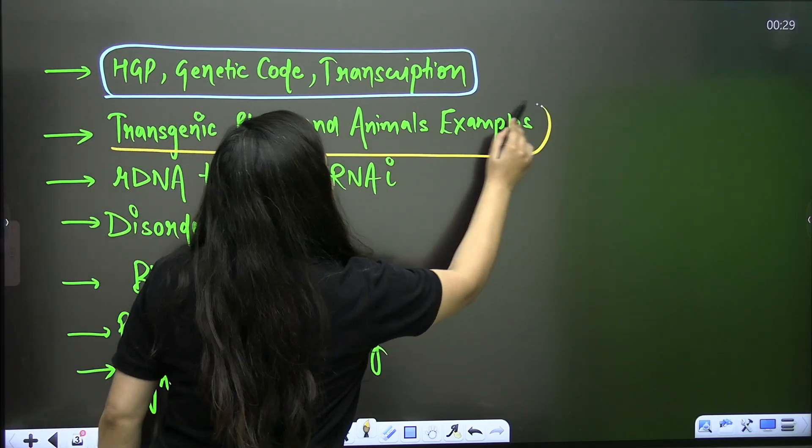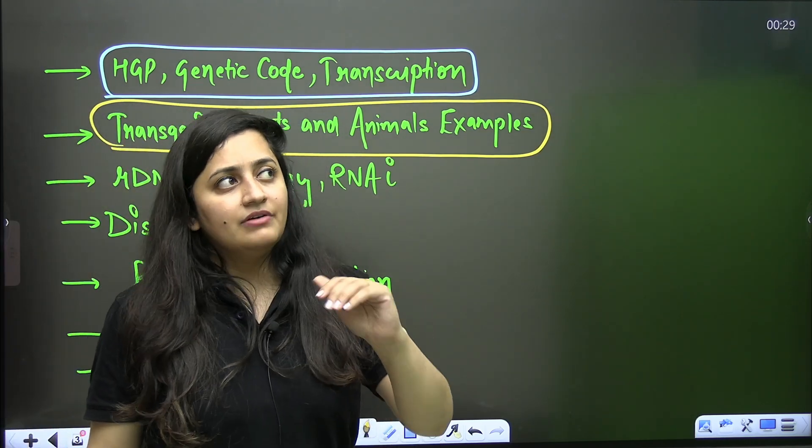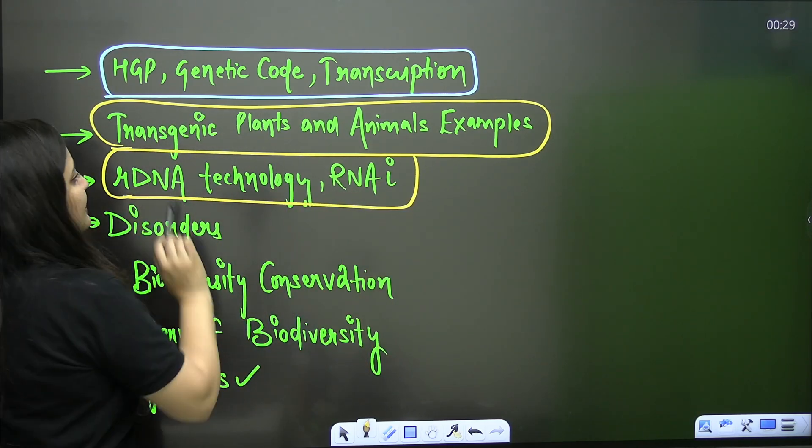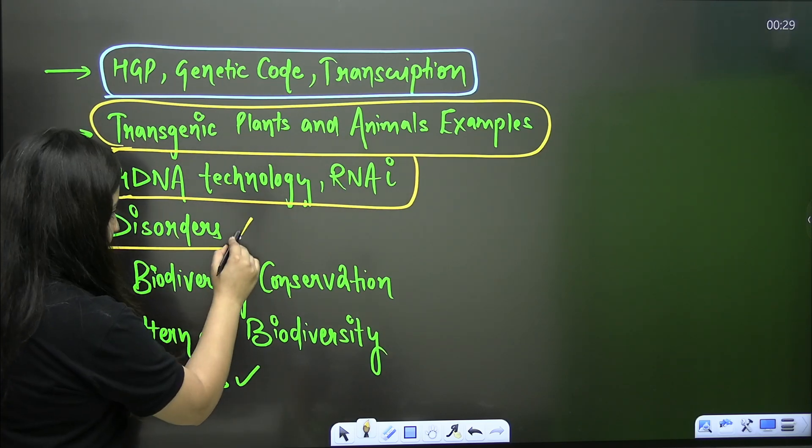Then the examples of transgenic plants and animals, like you know the Bt cotton, even how are they going to form. Parallelly you can cover the steps of recombinant DNA technology, RNA interference as well.